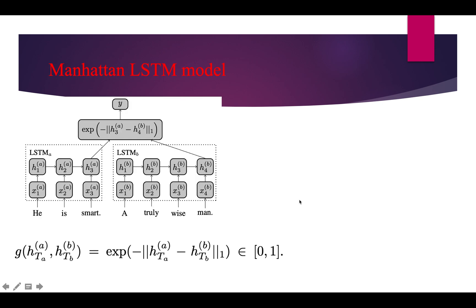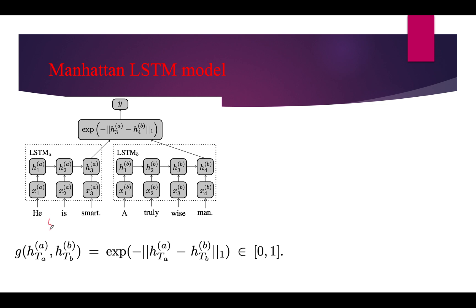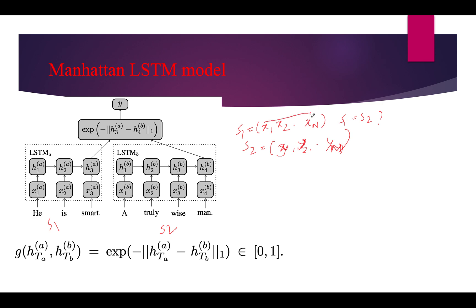With two LSTMs — L1 and L2 — L1 processes sequence 1 and L2 processes sequence 2. We then find the distance between the last hidden state representations. For example, sentence S1 might be 'he is smart' and sentence S2 might be 'a guy truly wise man', and we want to know how similar S1 and S2 are semantically.